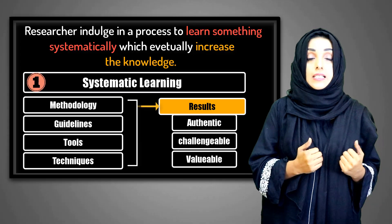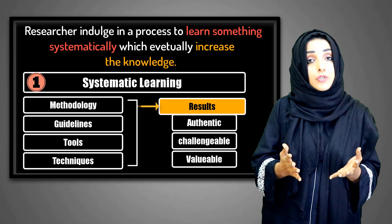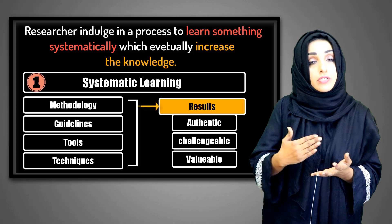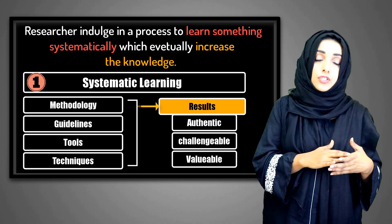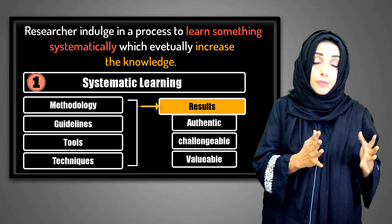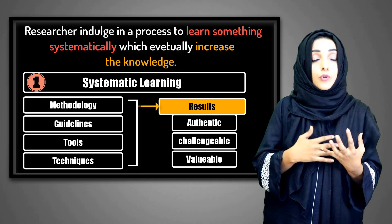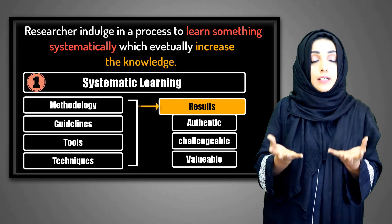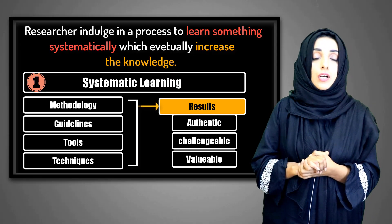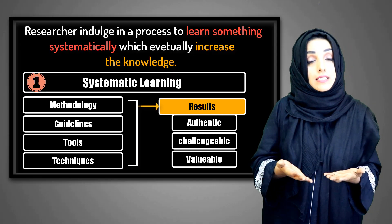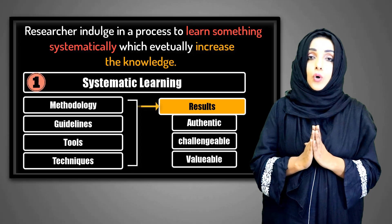Research ko pursue kerne ke liye researcher always un methodologies, un processes, un tools and techniques ka istamal kerta hai joh pehle se istamal shudha hain for that specific kind of research. Methodologies mein change laya ja sakta hai but that change should be authentic — uske aapke paas saare proof hone chahiye uski authenticity ke. Isi tarah data collect karne ka procedure bhi woh hona chahiye jo already literature mein reported hai.